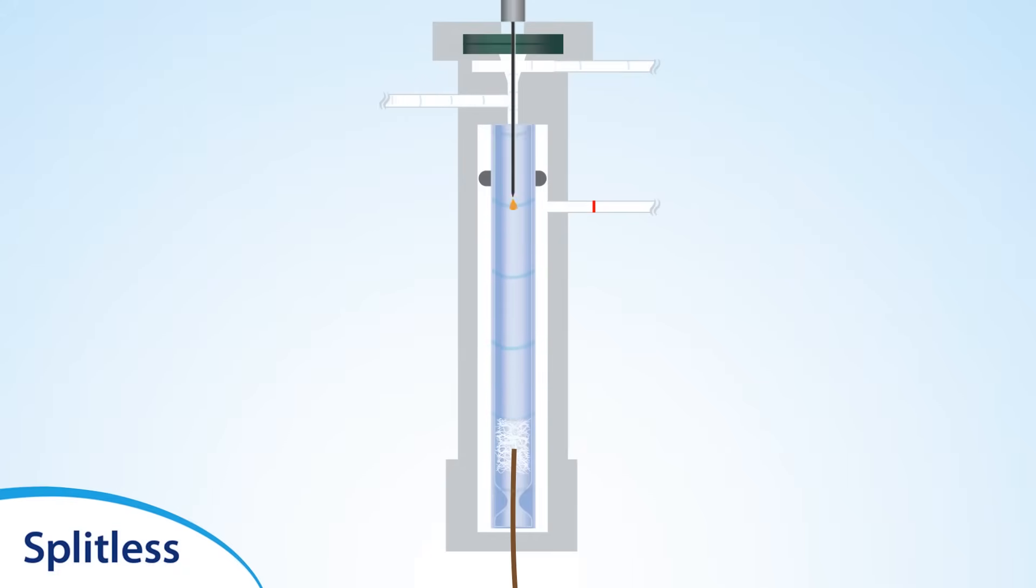During injection, the sample remains within the liner for longer before entering the column due to the lower flow rate.